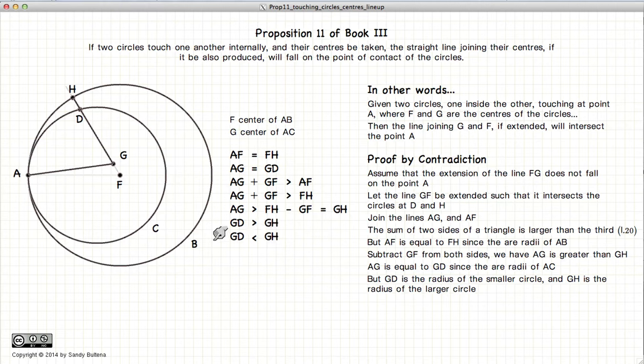We have GD is greater than GH, and GD is less than GH. And there is our contradiction.